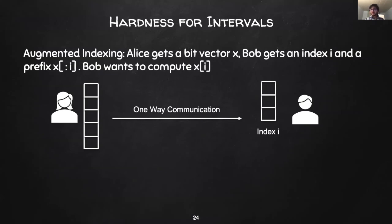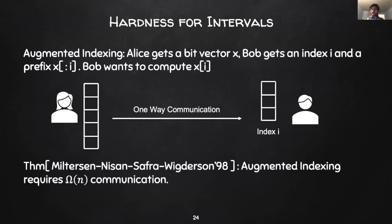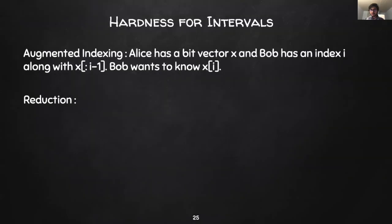Bob's goal is to then compute the value of the i-th bit in Alice's input. The communication is restricted to only Alice sending messages to Bob. One naive strategy to solve this problem is for Alice to communicate her entire input to Bob. A result of Miltersen, Nisan, Safra and Wigderson showed that this is indeed the best that Alice can do, and every potentially randomized protocol also requires omega-n communication.